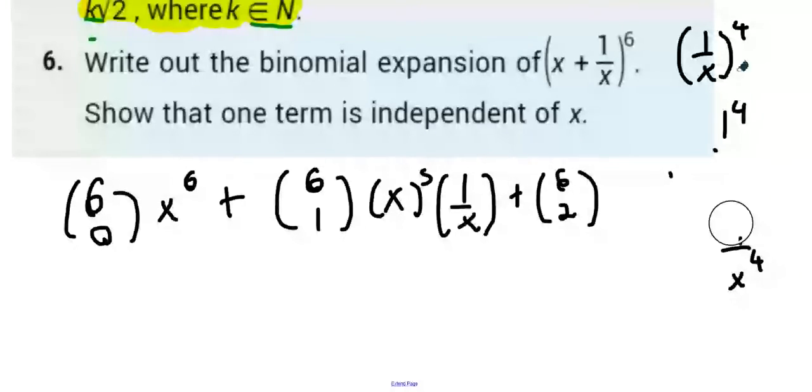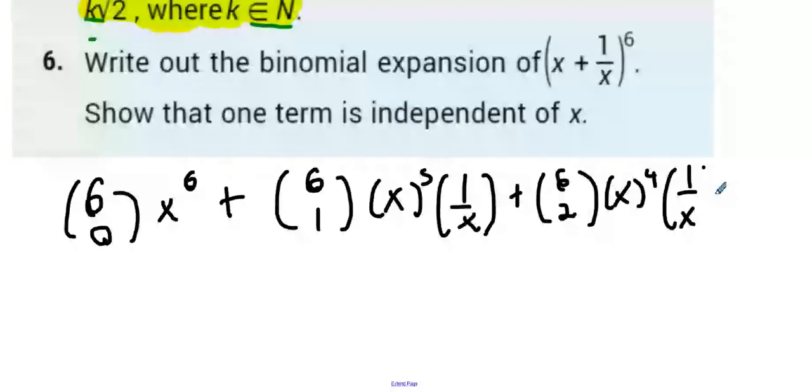We obviously have to expand the bracket. We have to do x plus 1 over x to the power of 6. That means we're expecting 7 terms. So I have the first two terms written down. Now I'm on to the next one. x4 all over 1 plus x squared. Now they all have to add to 6. Let's keep going.